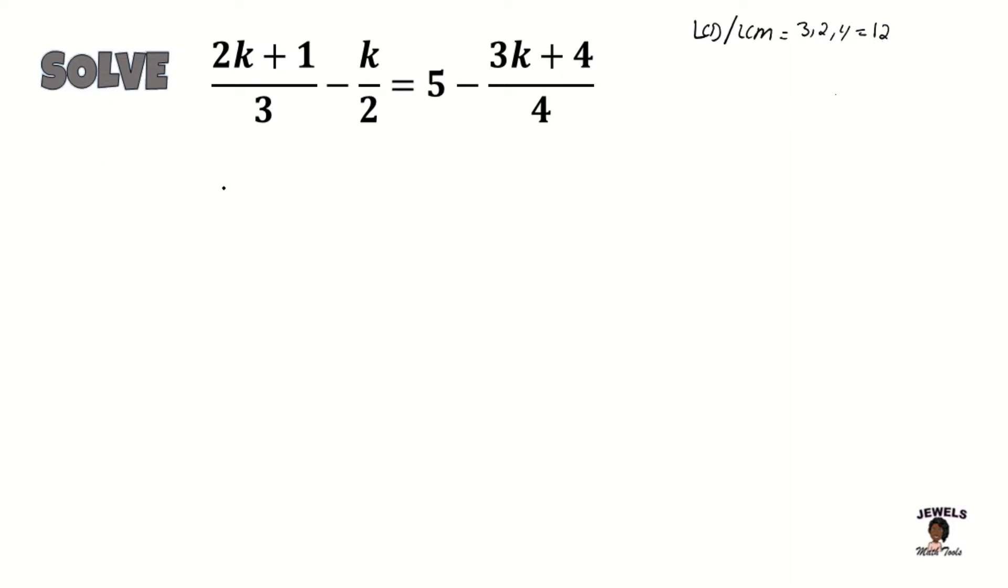So now that we have our LCD, that means we now need to change our fractions into their equivalent form where every one of these terms has a denominator of 12. Now in multiplying or working out our equivalent form, I'm going to do that on the side for this question so you'll be able to follow me and understand how I am changing my fractions to their equivalent form. I'm going to start with the first part, which is my 2K plus 1 all over 3.